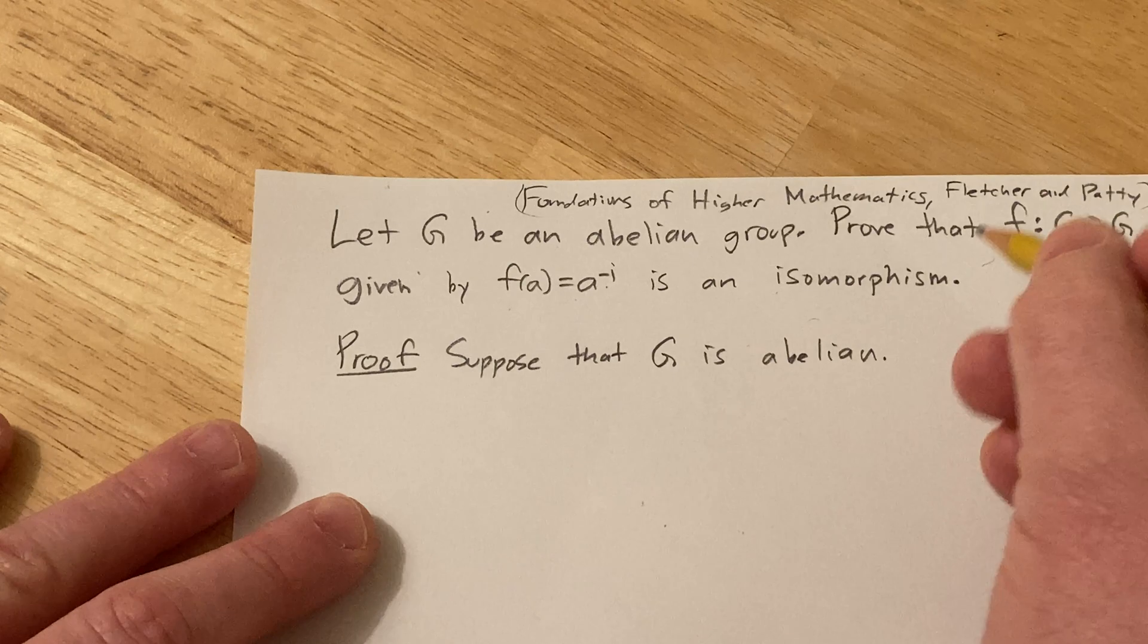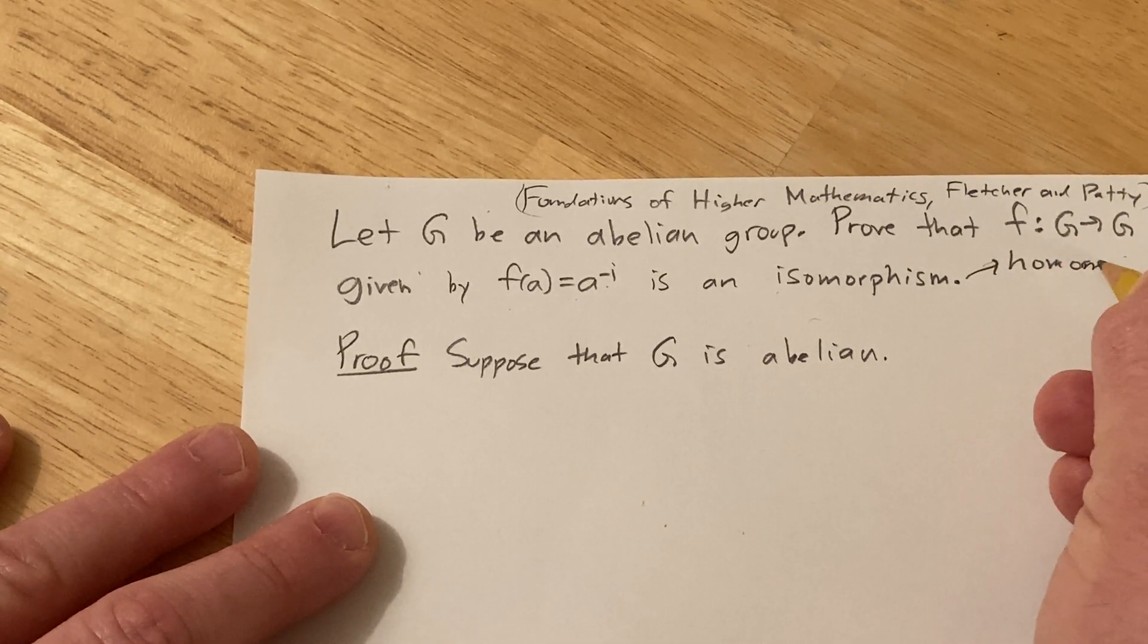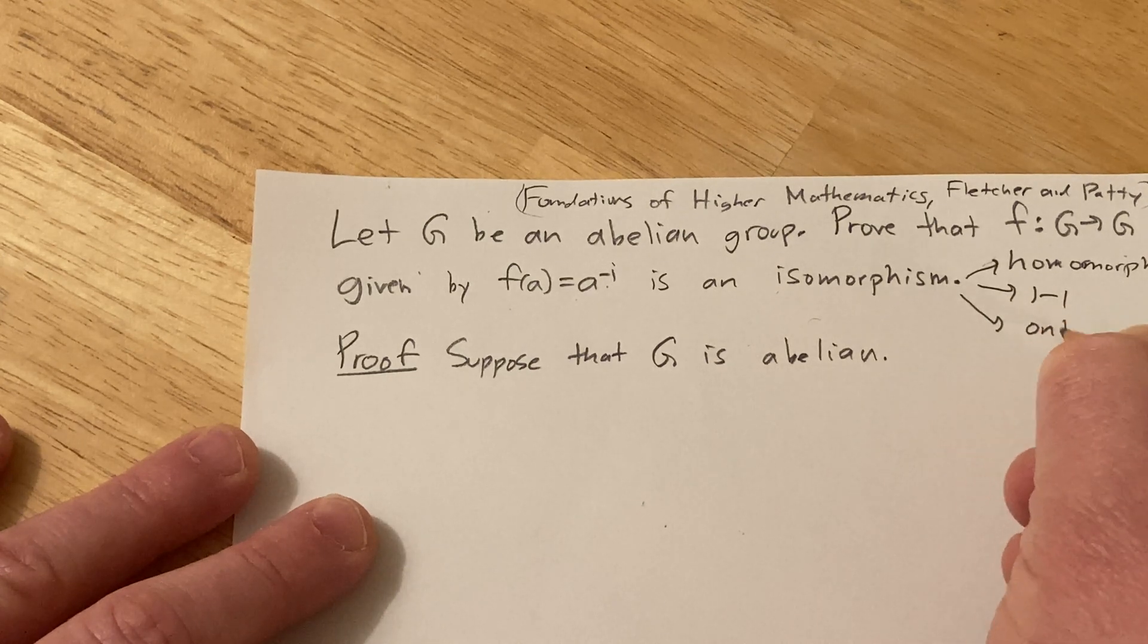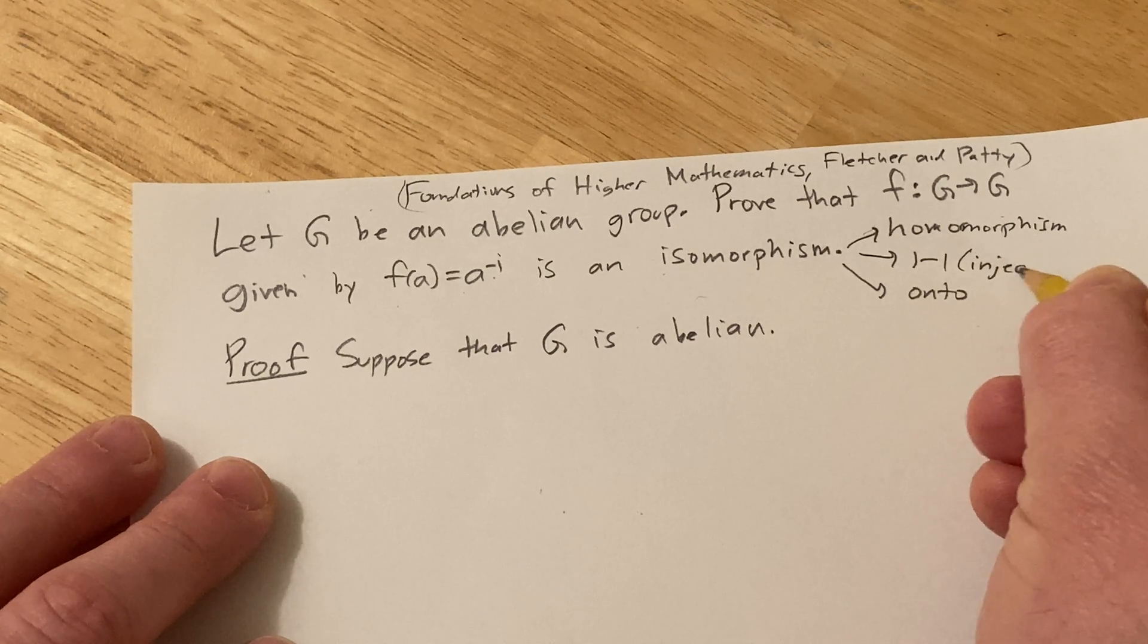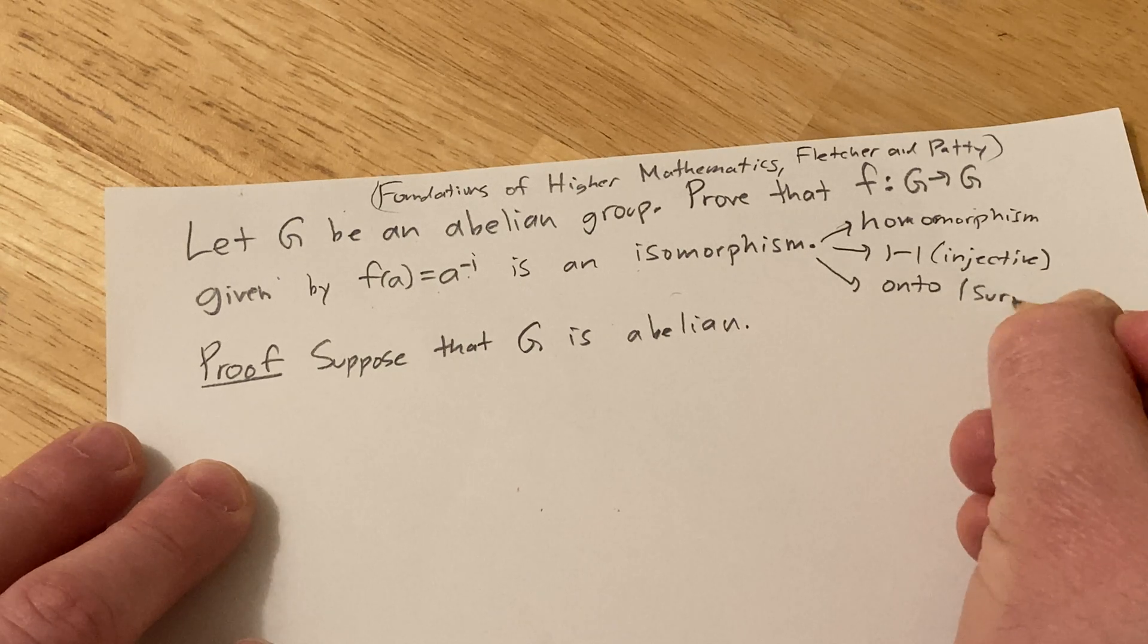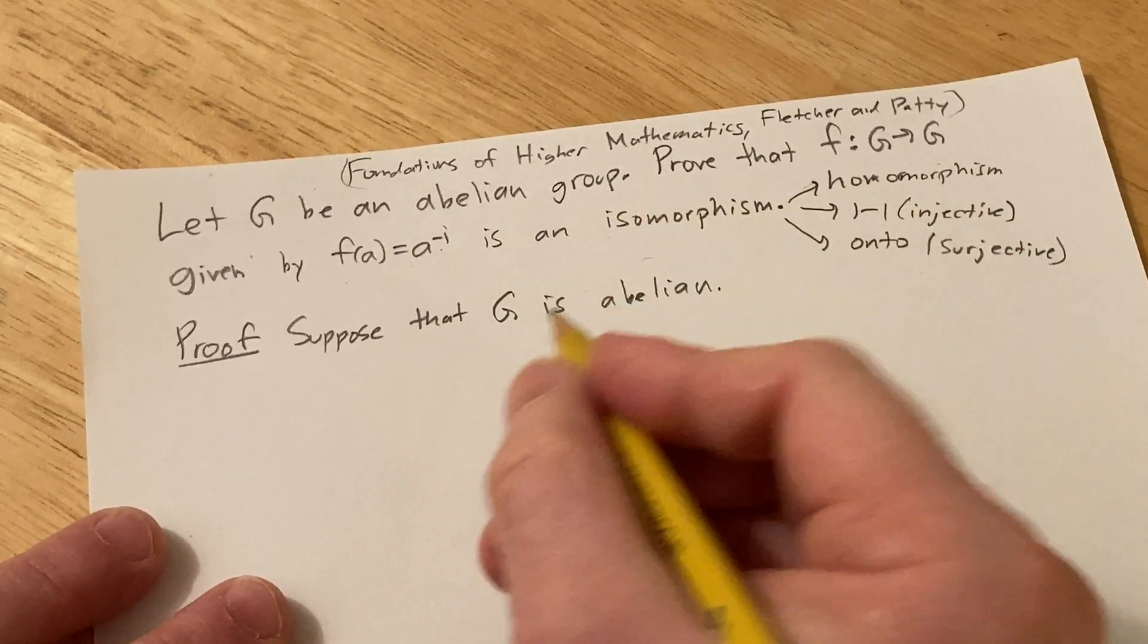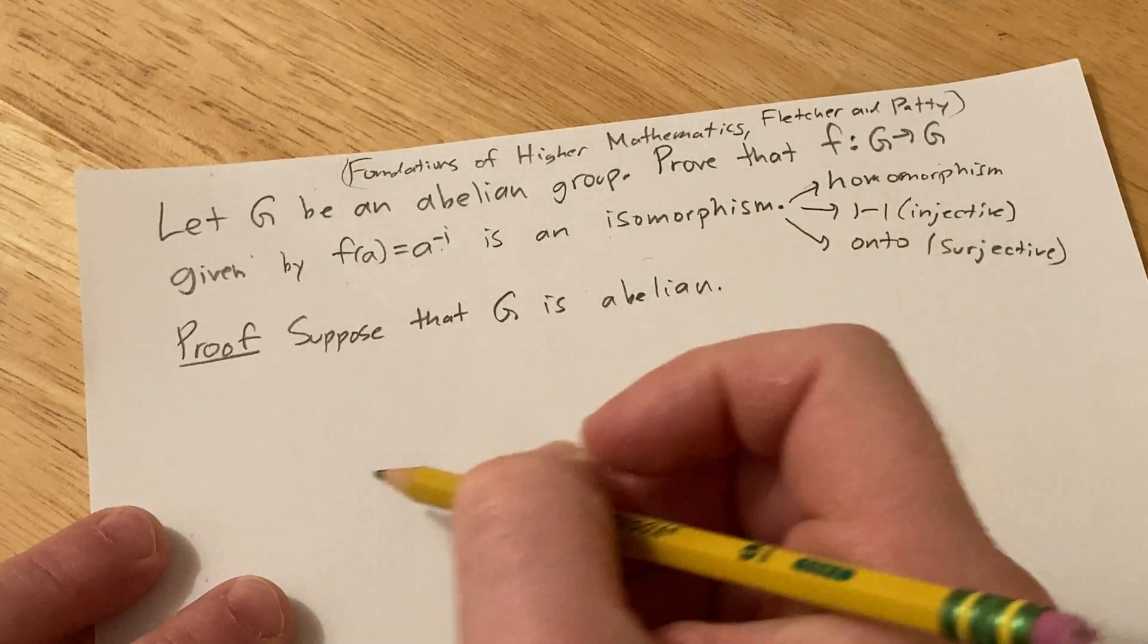So we have to show three things: we have to show that it's a homomorphism, we'll do that first. We have to show that it's one to one and we have to show that it's onto. One to one also means injective, and onto means surjective. So all kinds of big fancy words in this problem, it's really not a hard problem, it's just about applying definitions. So suppose that G is abelian and now we have to show all these things. Let's start with the homomorphism part.